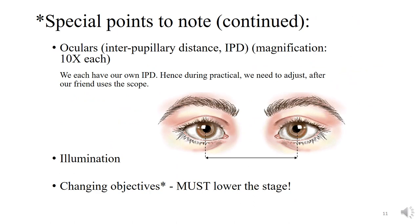Another special point: we each have our own interpupillary distance — the distance between our two pupils. For some of us it may be wider or narrower, so it is important to adjust the ocular legs to get a good view of the image.